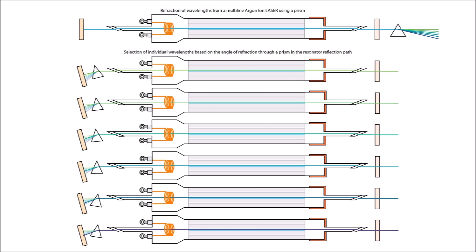Many argon ion lasers are multiline, meaning they produce more than one wavelength of light that can be refracted through a prism as seen in the top illustration. This concept is what allows a single line to be selected when a prism is put into the path of the laser beam between the high reflector and the laser tube. The angle of refraction determines which line produces stimulated emission.